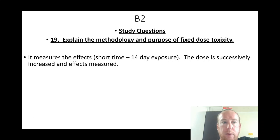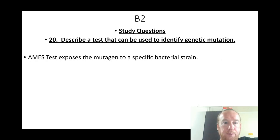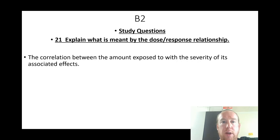Explain the methodology and purpose of fixed dose toxicity: it measures the effects of short-time 14-day exposure; the dose is successively increased and the effects measured. Describe a test to identify genetic mutation: the Ames test exposes the mutagen to a specific bacterial strain. What is meant by dose-response relationship? The correlation between the amount of exposure and the severity of the associated effects.